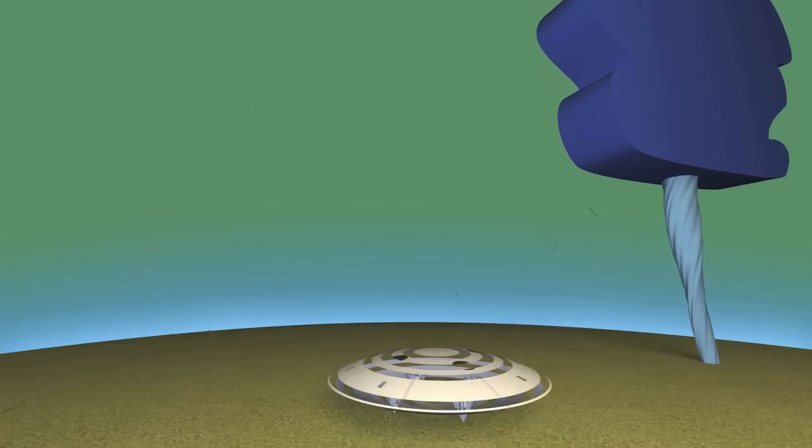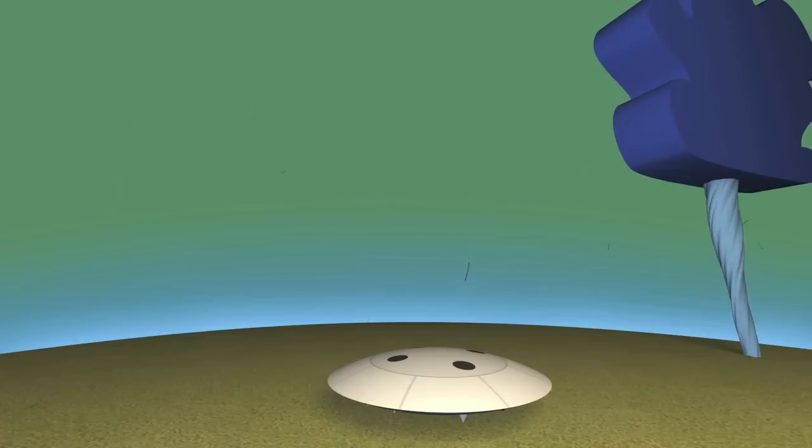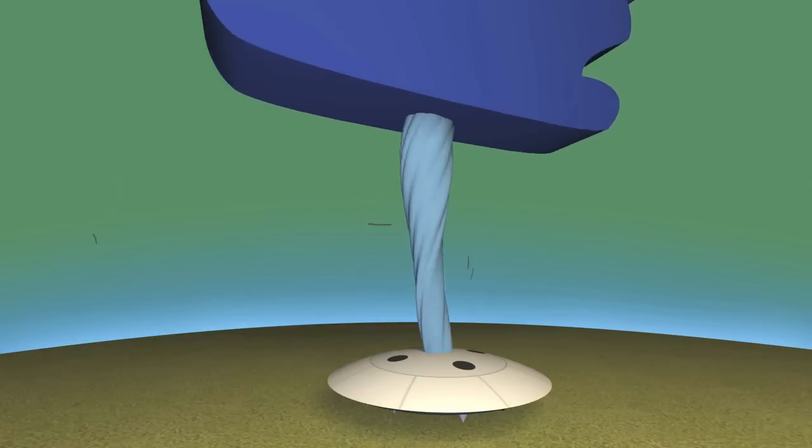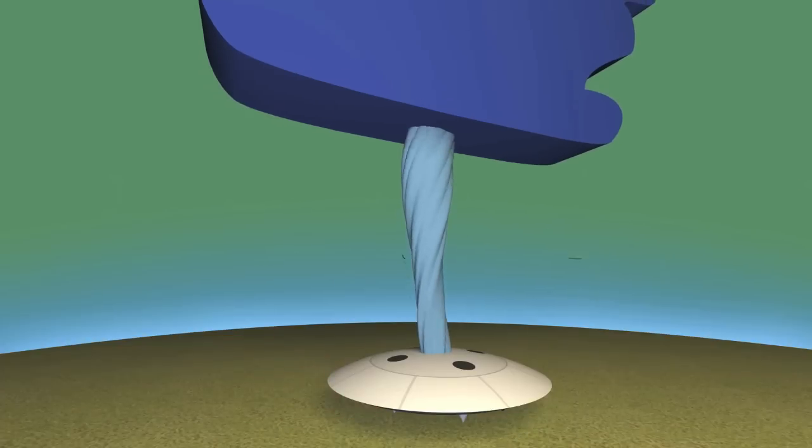To wait for a tornado to pass by is not very practical and they're kind of dangerous, so we need to create one artificially.